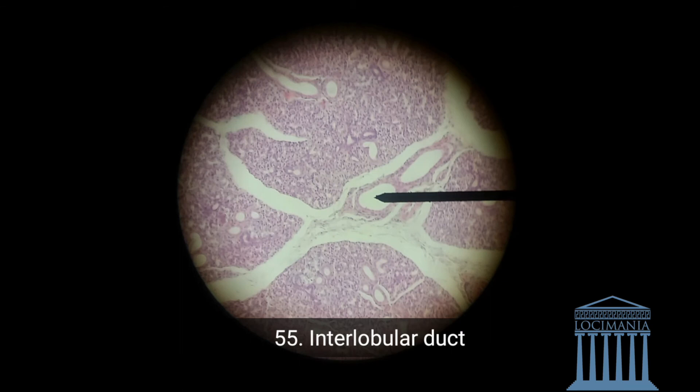Going on, we have the interlobular ducts, and they are always within the connective tissue. How do you know they're within the connective tissue? Well, we have cuboidal cells around. So if there are cuboidal cells around it, it is an interlobular duct — within the connective tissue with cuboidal cells around.